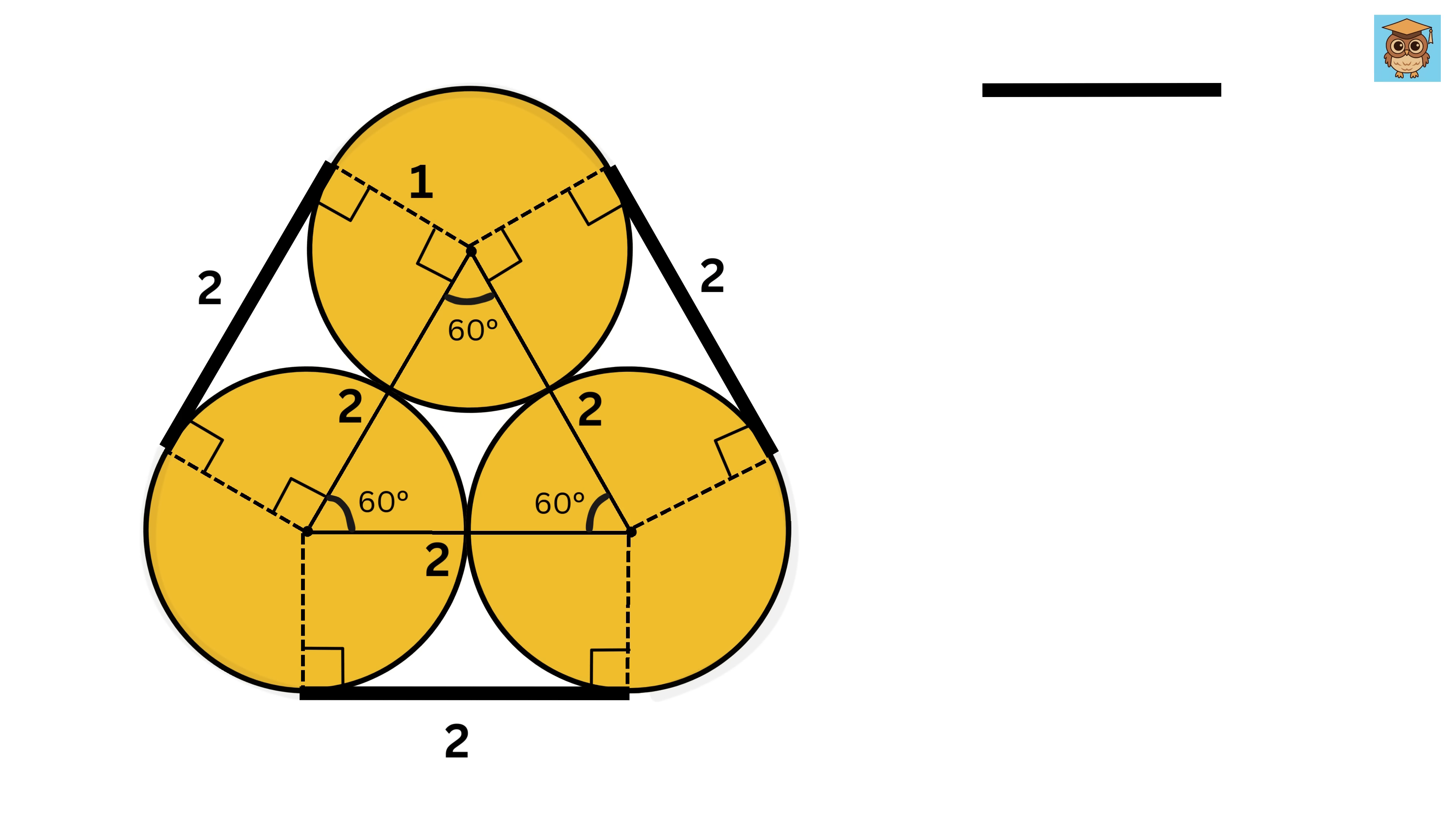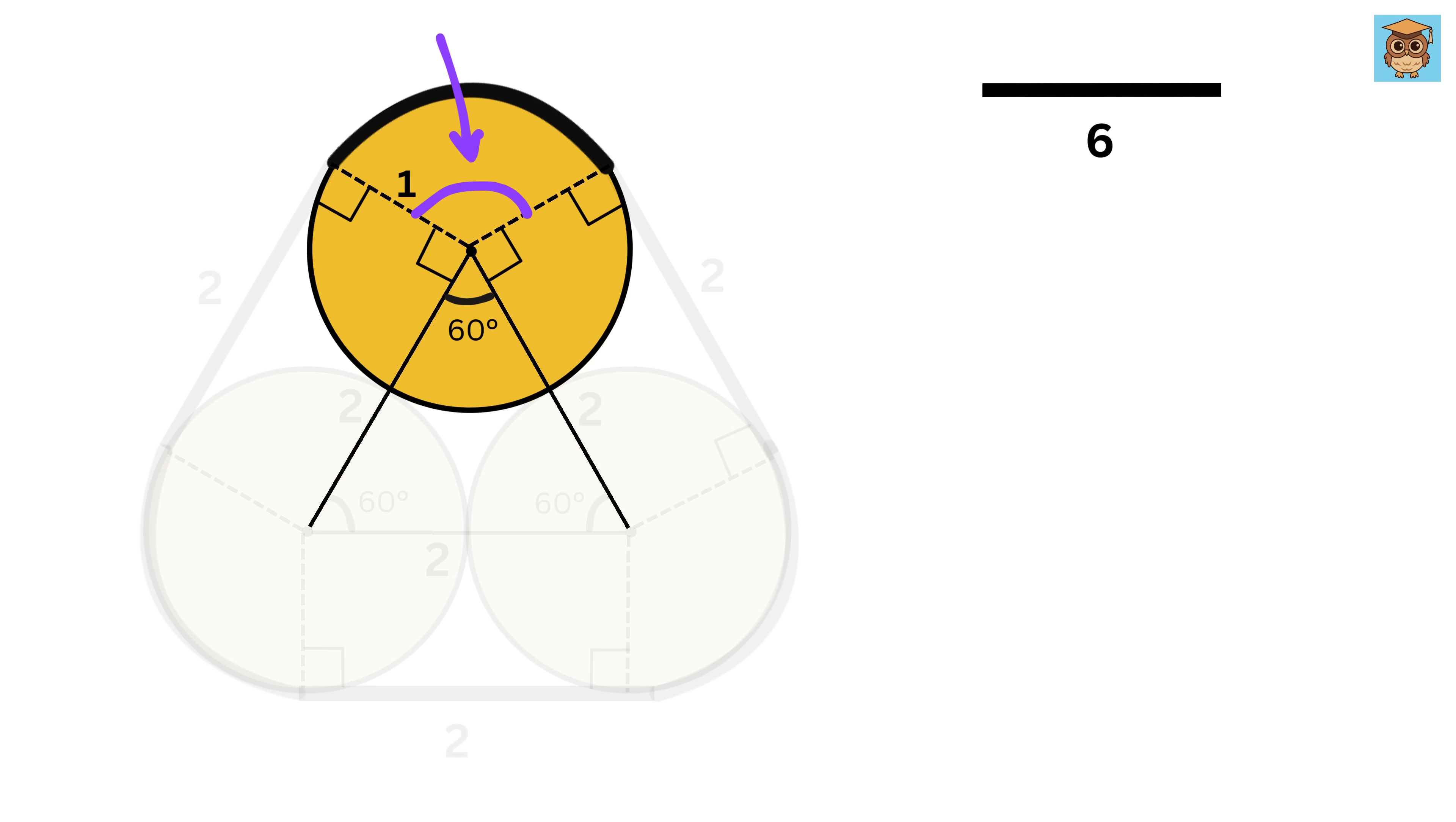Using similar arguments, we can show that these two line segments of the band will also be equal to two units. So the total length of all the straight parts of the band equals two plus two plus two, or six units.